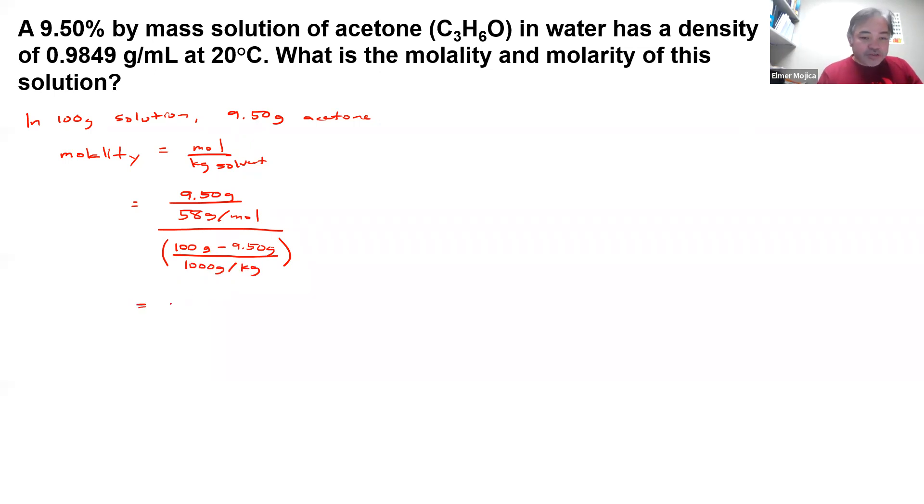And then we divide it by 1,000 grams per kilogram. So out of this, you're going to get 1.81 molar. That's the molality.